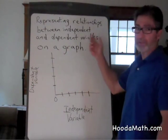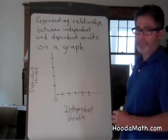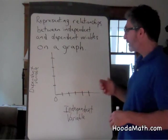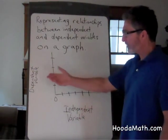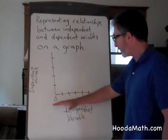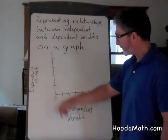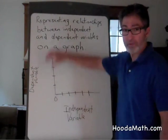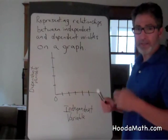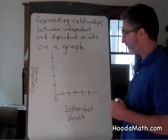Representing relationships between independent and dependent variables on a graph. When we are graphing the relationship between independent variables and dependent variables, we represent the independent variables on the horizontal axis, and the dependent variables go on the vertical axis. An example would be if we had a constant rate someone was being paid. We can graph that pretty easily.